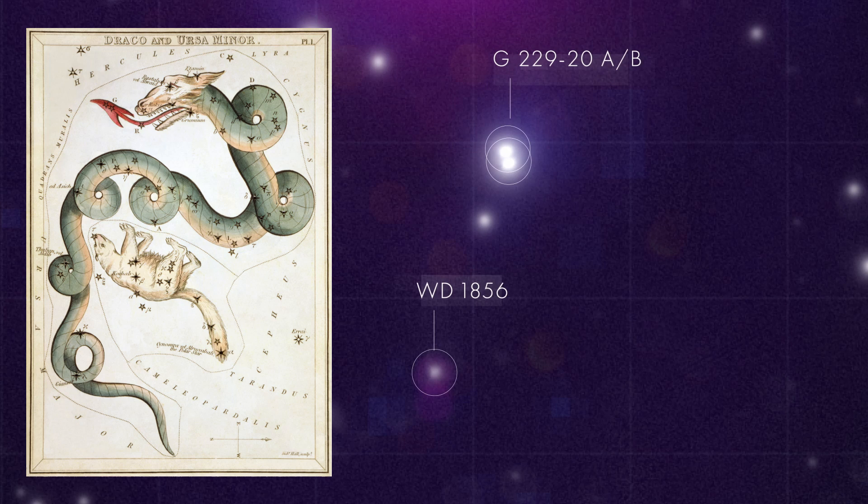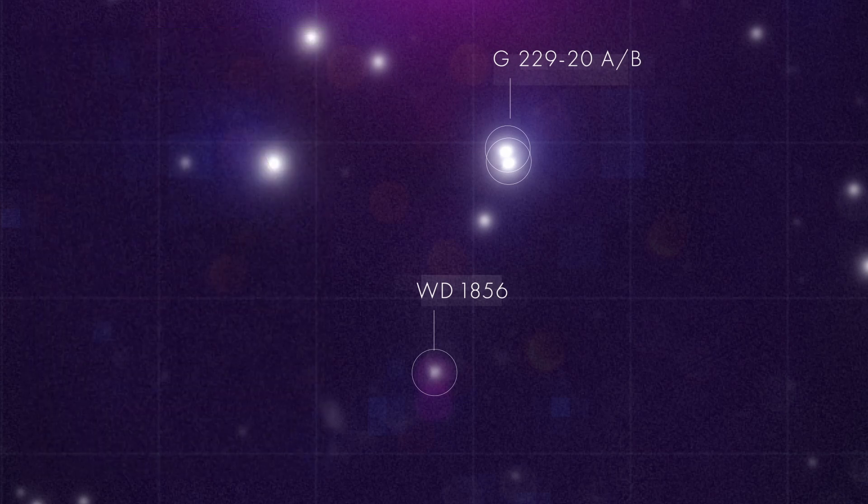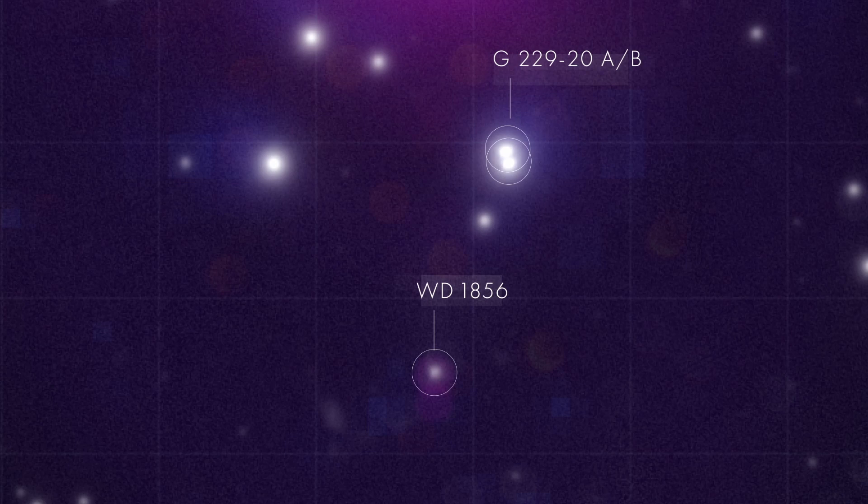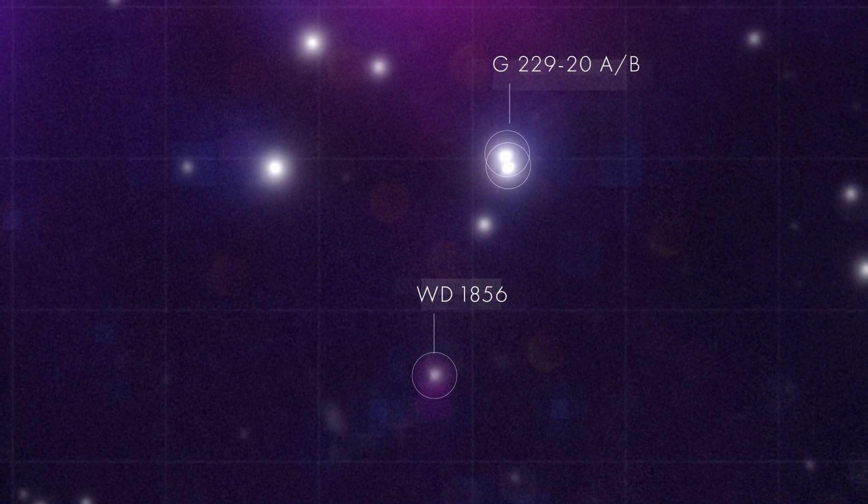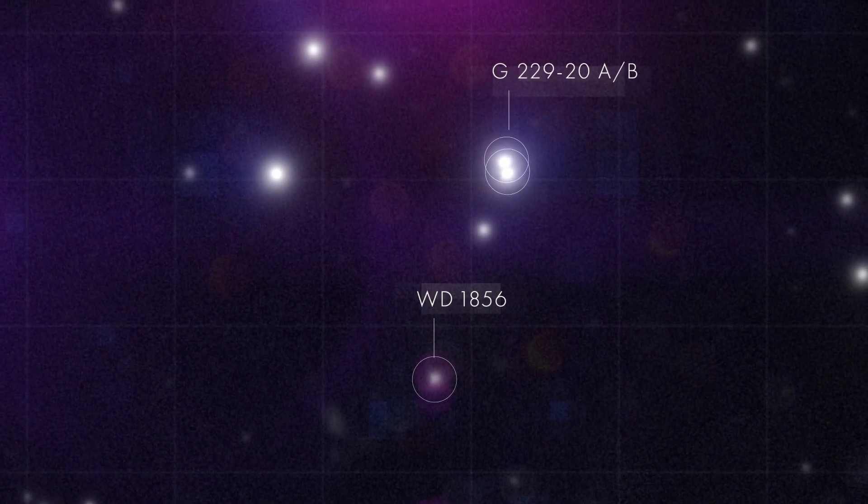They believe that the white dwarf star is around 10 billion years old making it one of the oldest ones we have looked at. We have previously discussed the problem with how they age white dwarf stars when we looked at the impossible white dwarf.